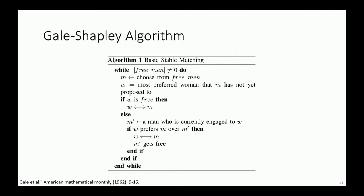Gale-Shapley is an algorithm for finding the stable match. As you can see, it's an iterative algorithm and at each iteration a free man who is not already assigned to any partner, so-called, proposes to a woman that he prefers the most but he has not yet proposed to.